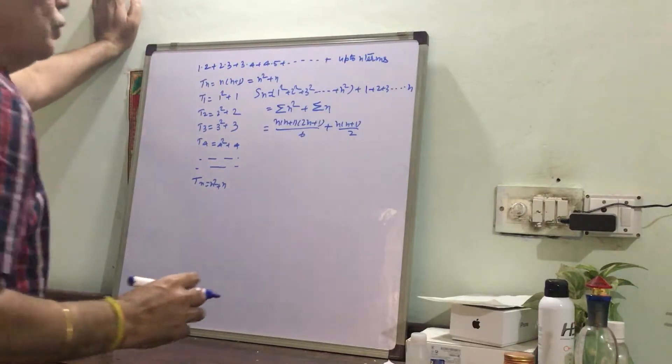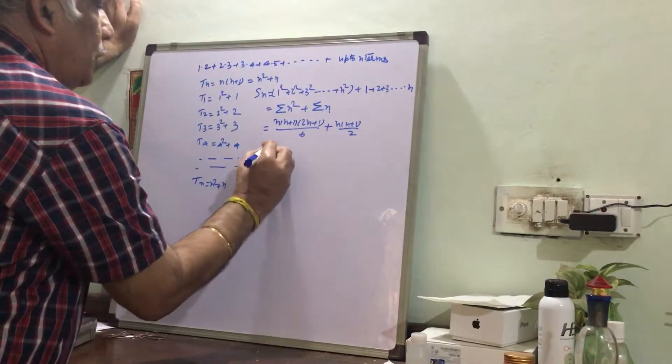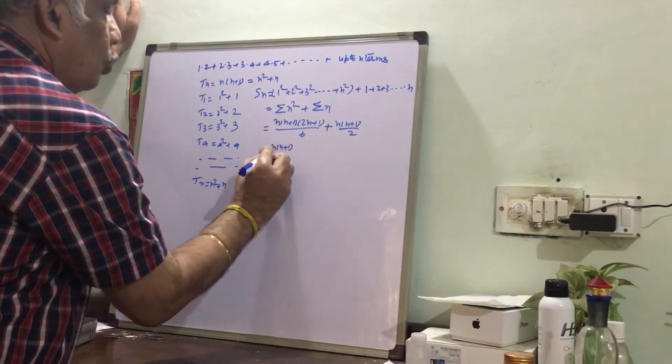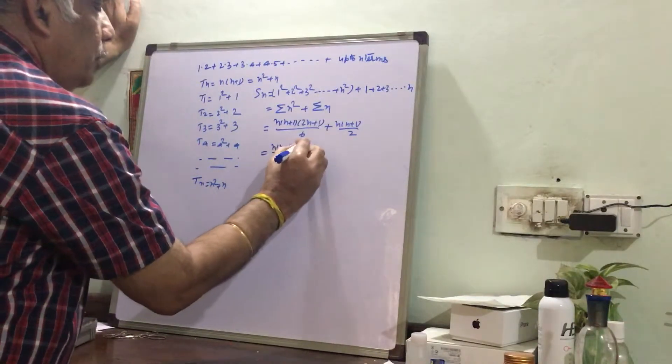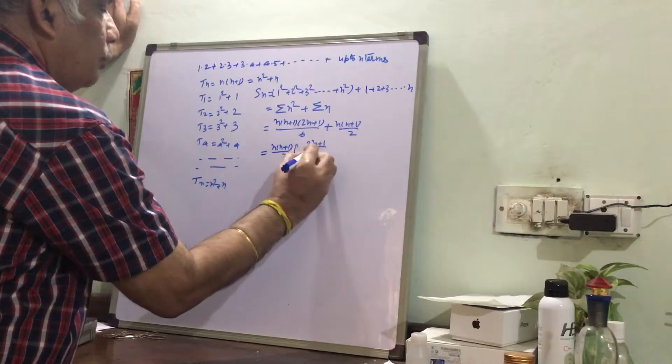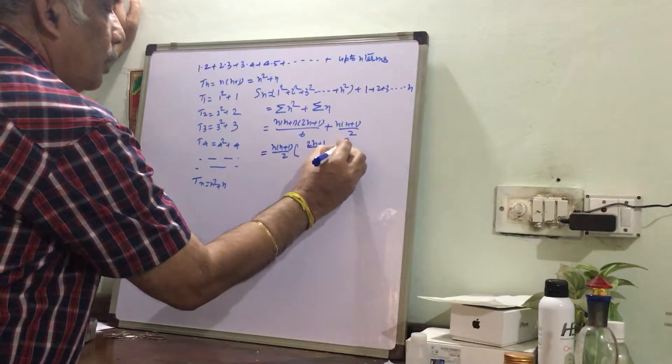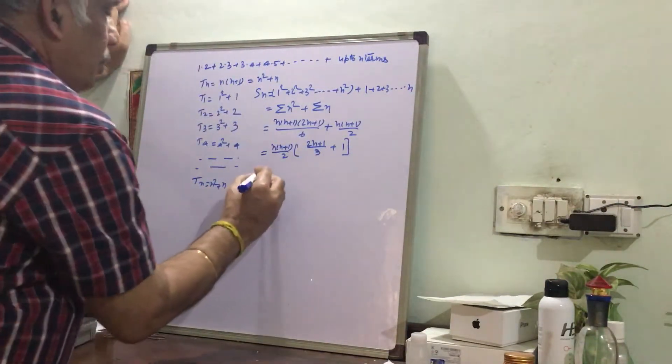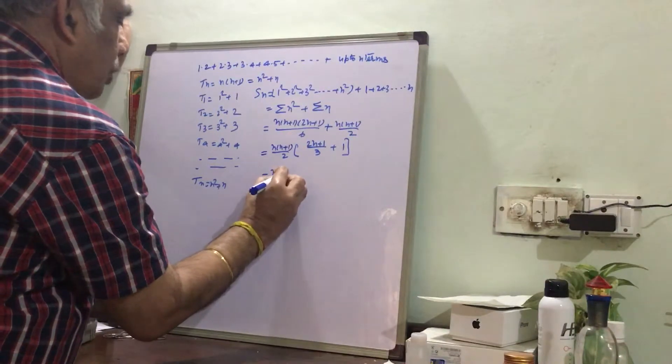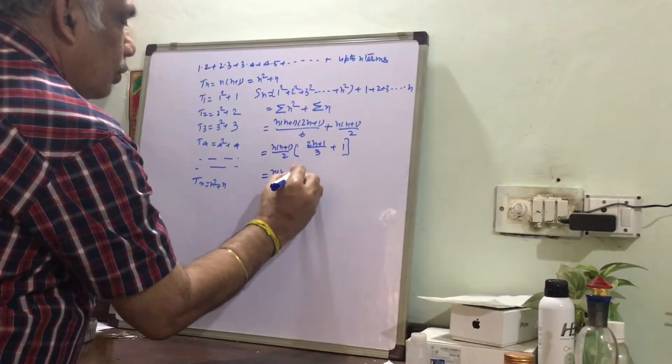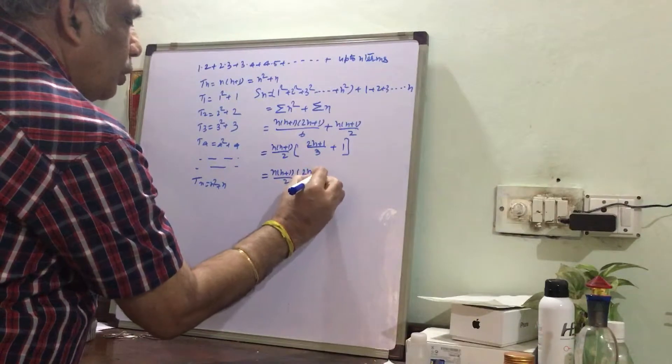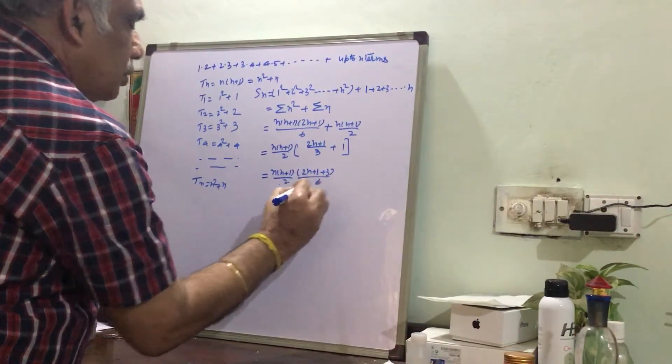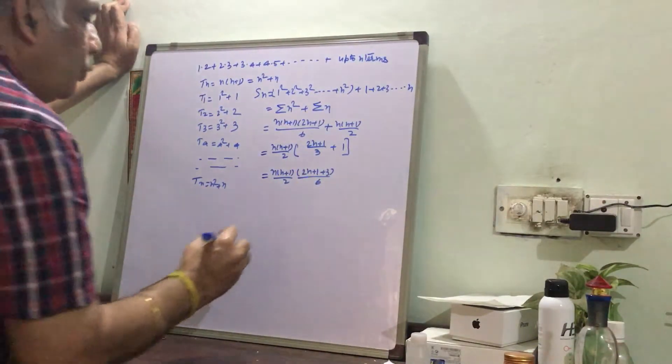I hope you know this value of sigma n and sigma n². Now we take n(n+1) by 2 common, so here it is left (2n+1) by 3 plus 1. Correct. Now we simplify it further: n(n+1) by 2, this is (2n+1) plus 3 by 3.